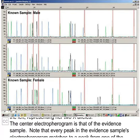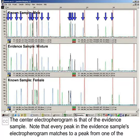The center electropherogram is that of the evidence sample. Note that every peak in the evidence sample's electropherogram matches to a peak from the electropherogram of one of the two known samples, indicating that those individuals could not be excluded as being the two contributing sources of the DNA found in the evidence sample.